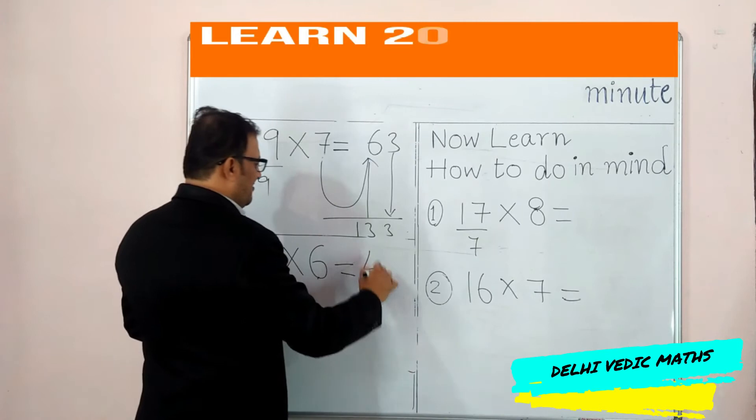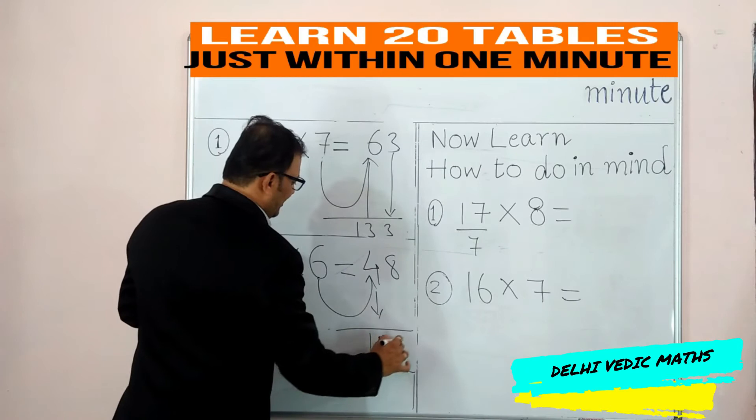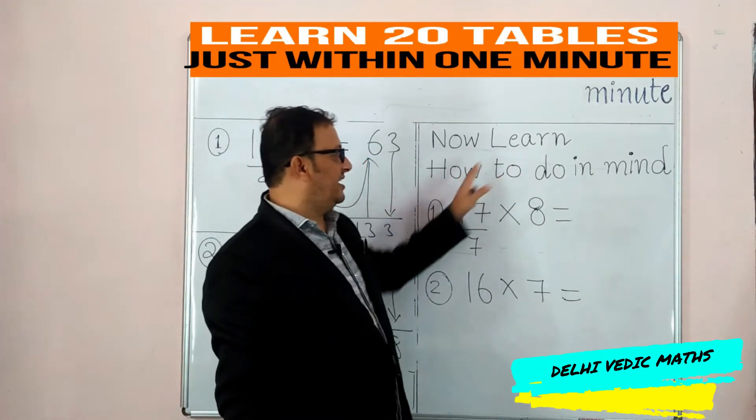8×6 is 48. Now, we will give you the 8th table.